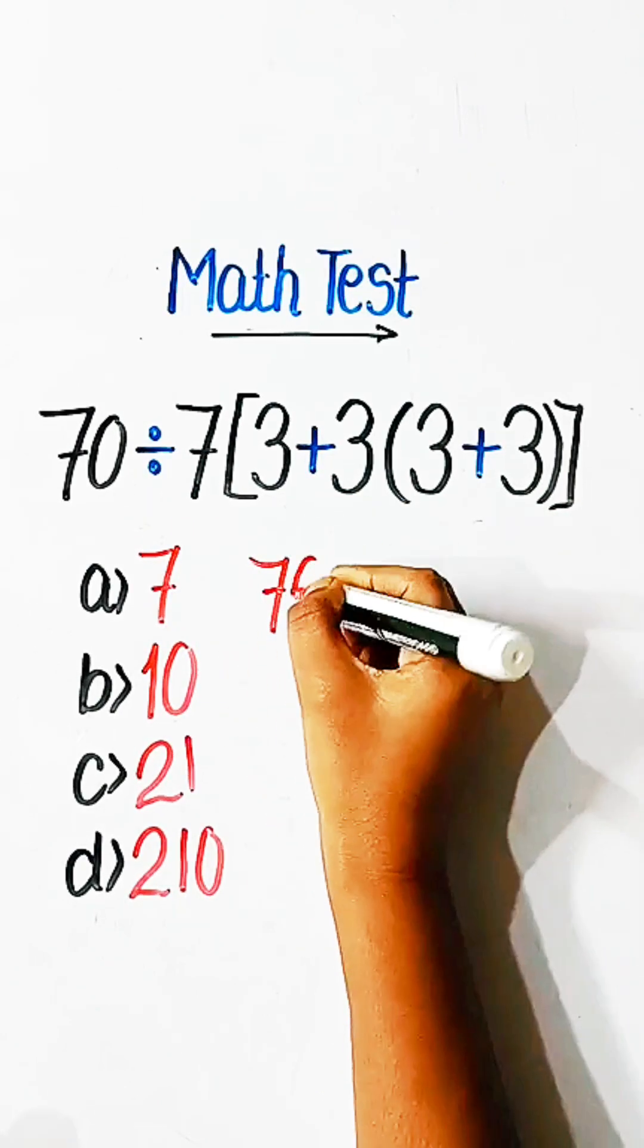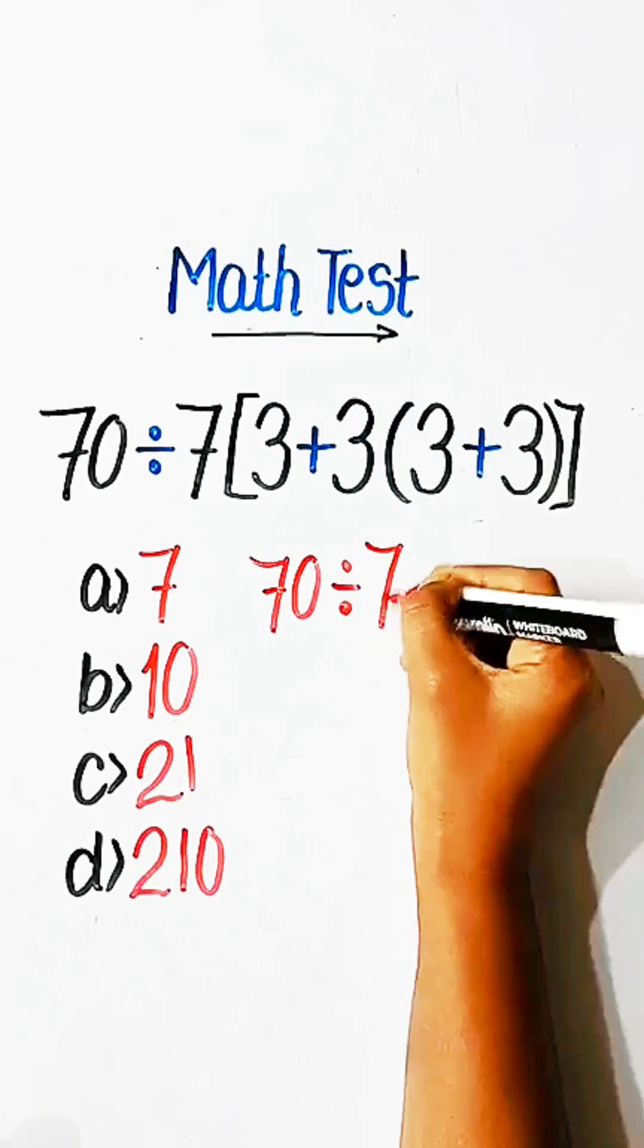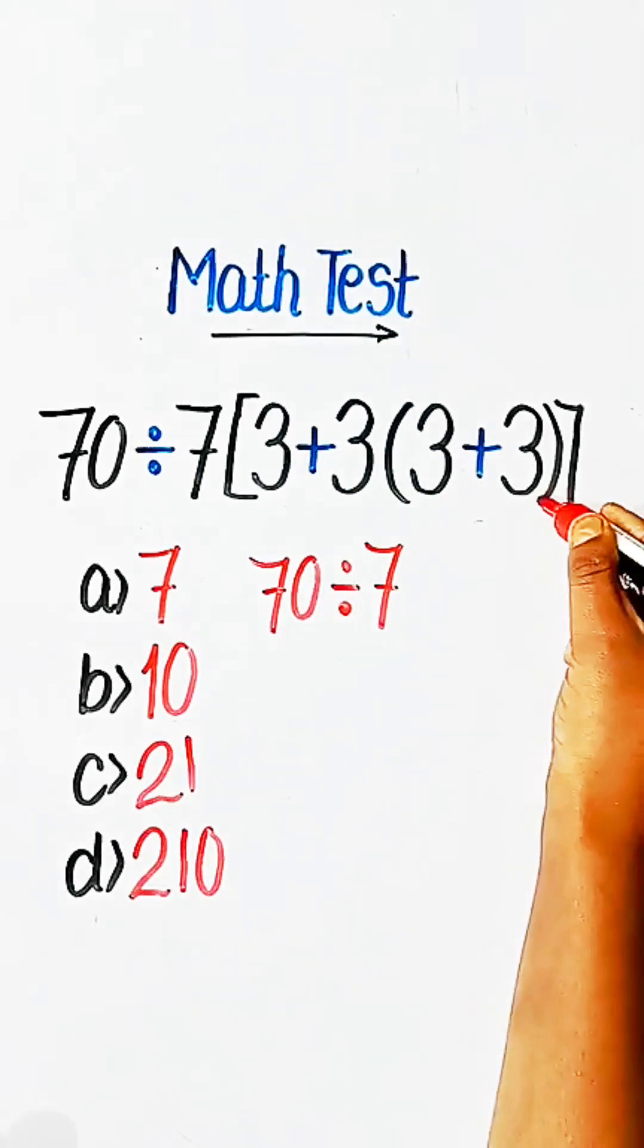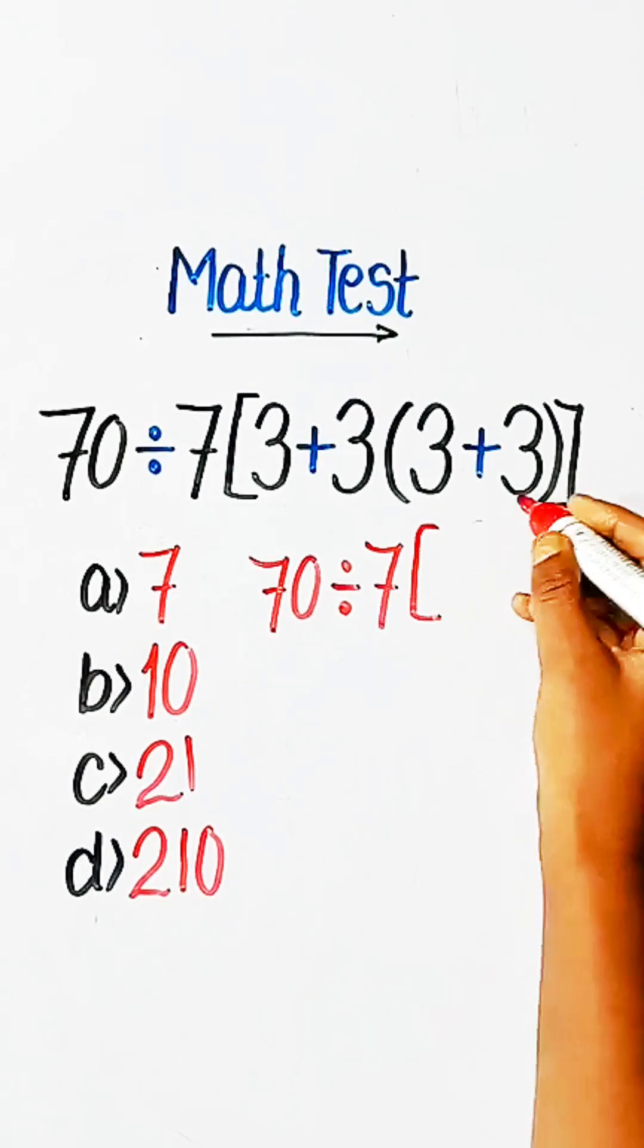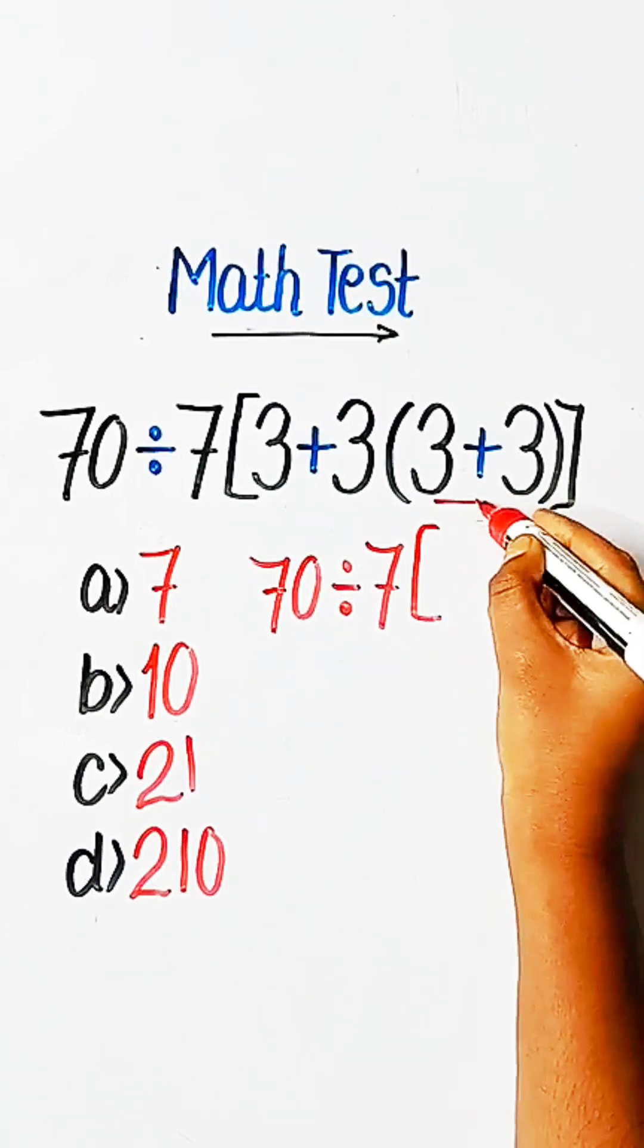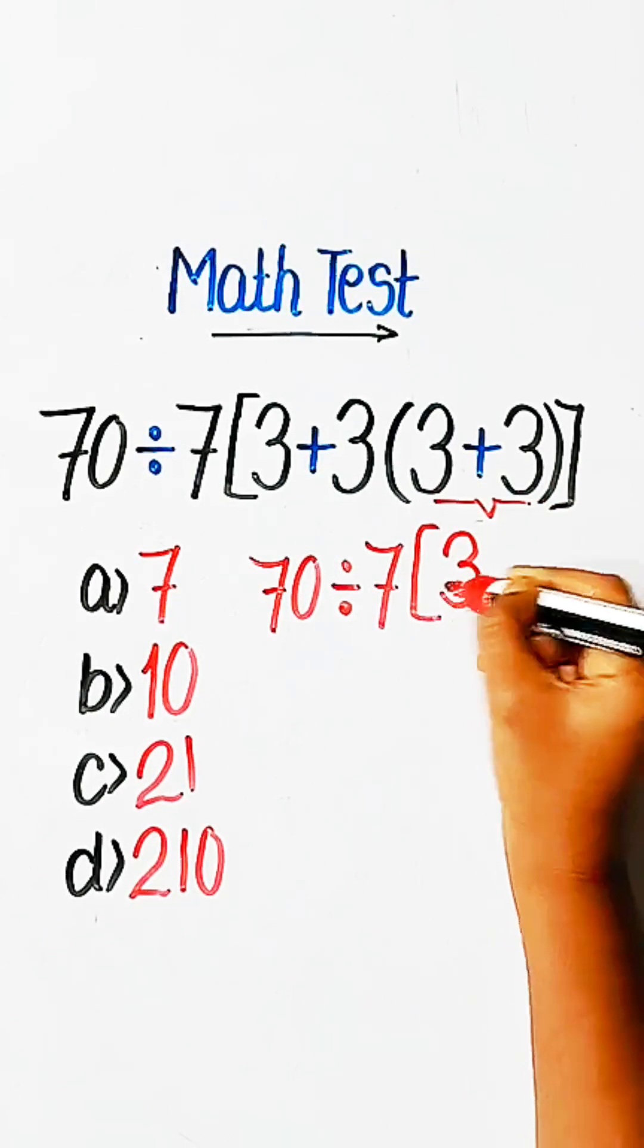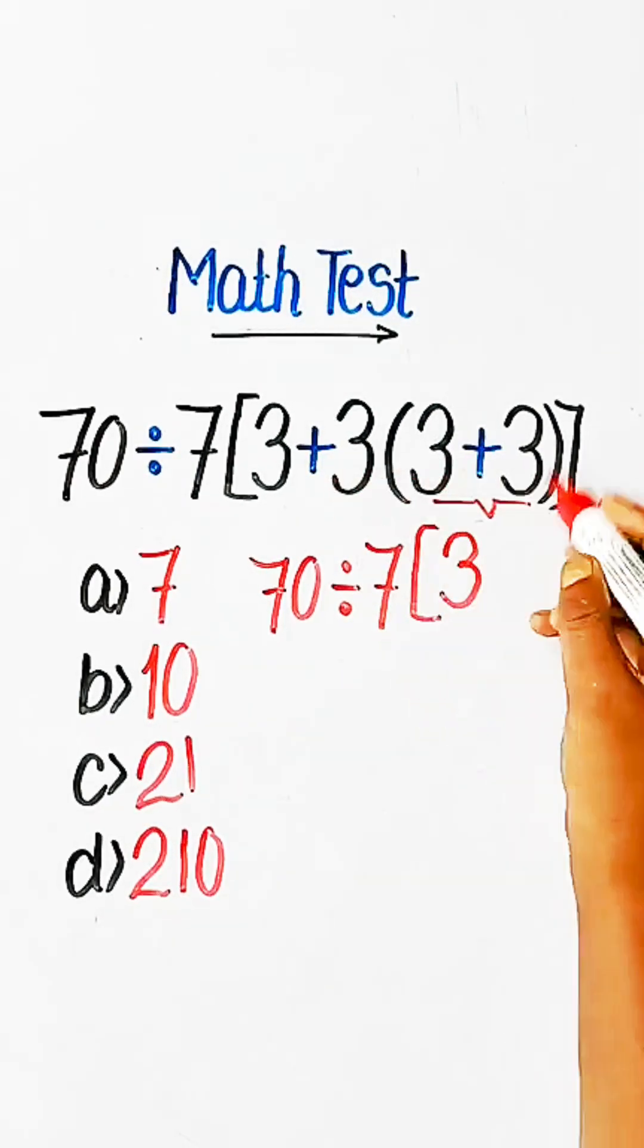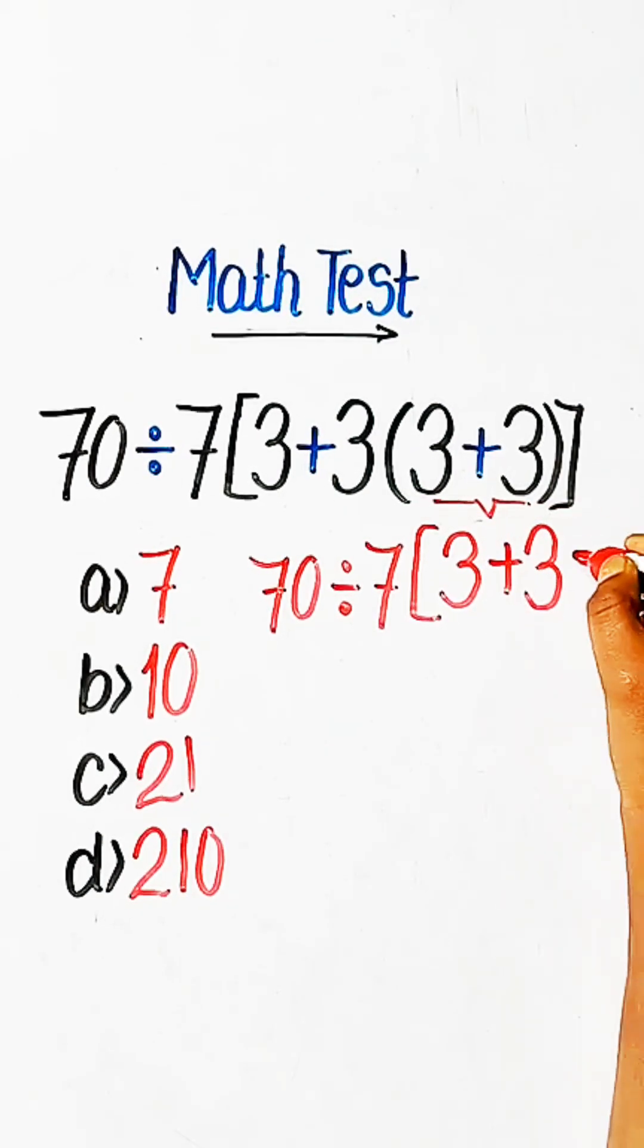Now it's time to solve this math problem. So we can write 70 divided by 7. We have to solve this bracket first, so 3 plus 3 equals 6.